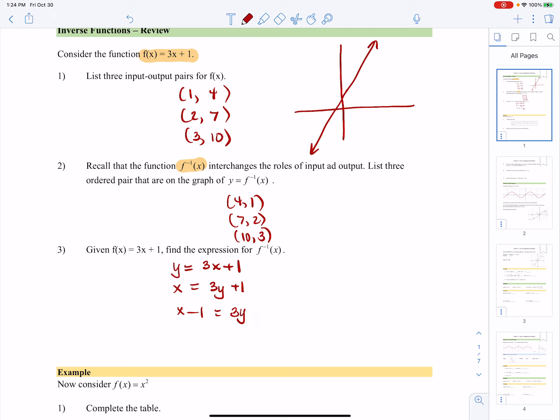So I'm going to subtract 1 from both sides and then divide both sides by 3. And that is the expression for f inverse of x. And if you want to check, all three of these points should be solutions to that equation right there. So that's our formal procedure for finding the inverse function.